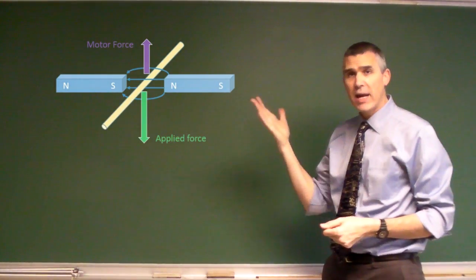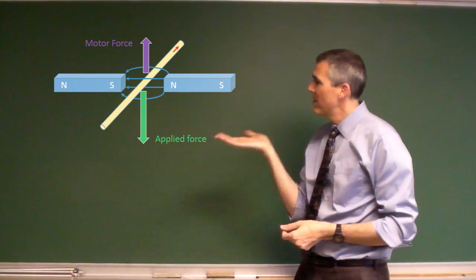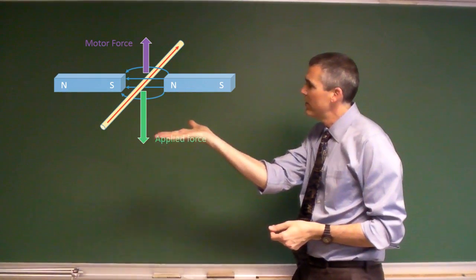So now that I know using my right-hand rule, number three, right-hand rule for motor force, then between those two magnets, magnetic field is going that way, current is going that way.